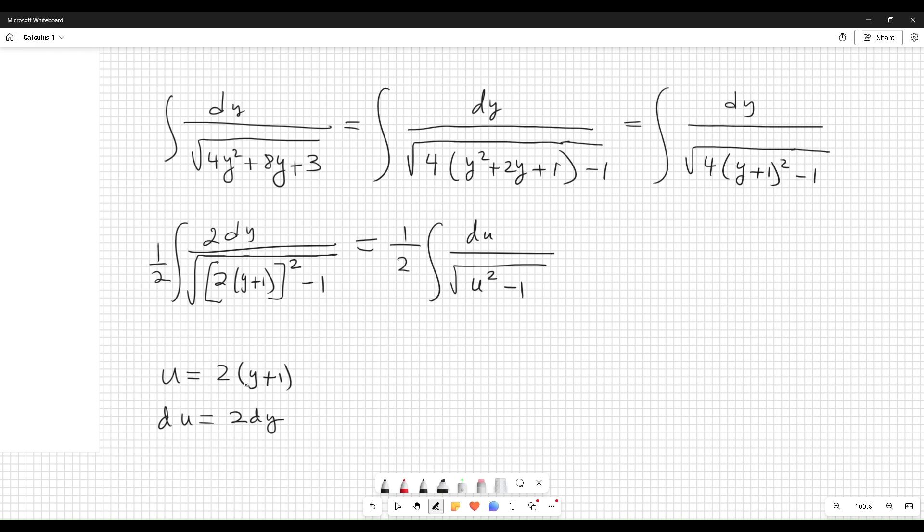And this is a typical trigonometric substitution. Let u equal secant theta. Then du is secant theta tangent theta d theta. So we have one-half integral of secant theta tangent theta d theta.